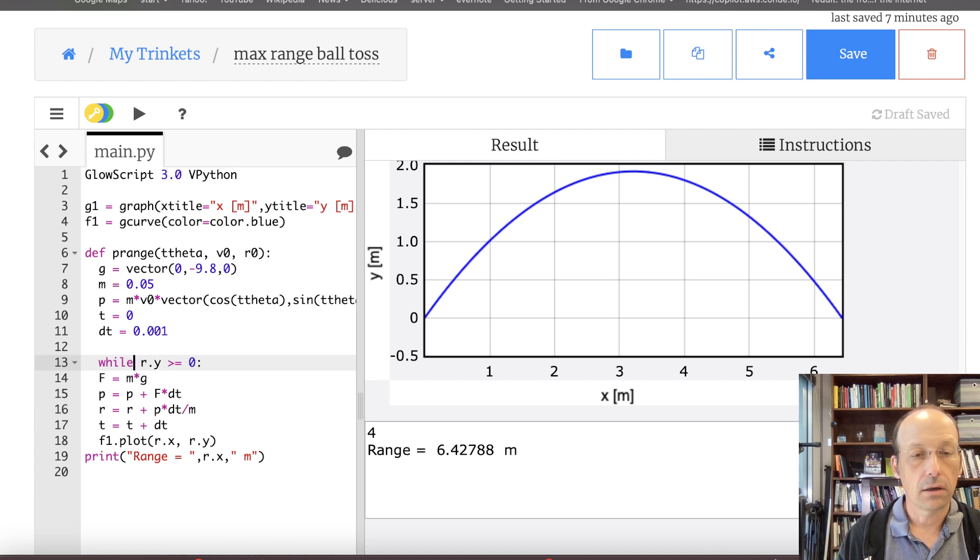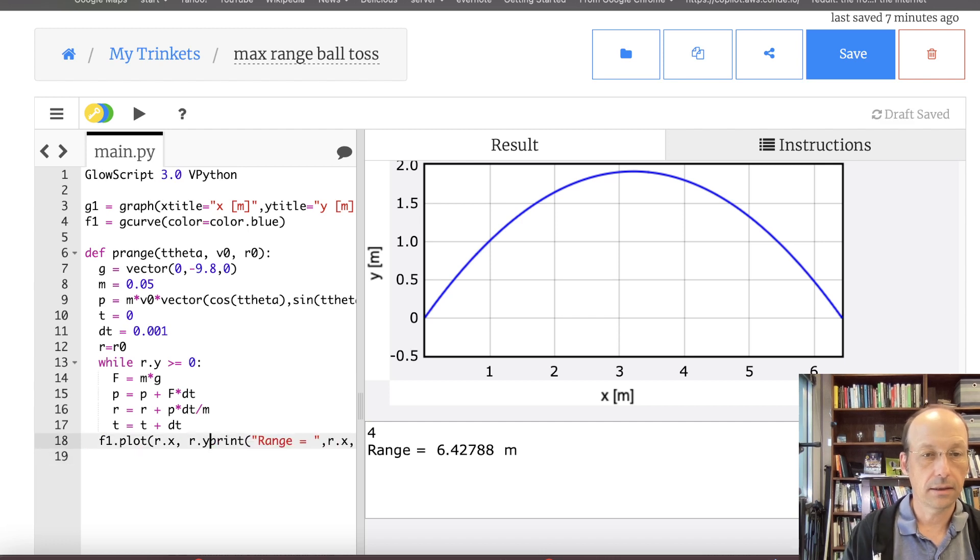And then this is going to be while, I can just say this. R equals R0. So now I'm setting my parameter R to the beginning. Right there. That's fine. So then this is fine. This is fine. That's fine. Fine. I don't want to plot that. And I don't want to print that. What I'm going to do is return. I just want the X value, the final X value. So I'm going to say return R dot X. And let's try this.